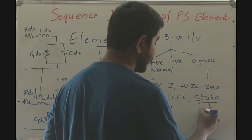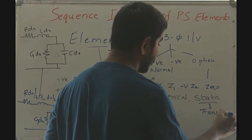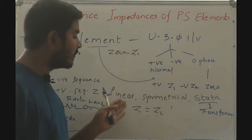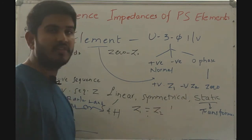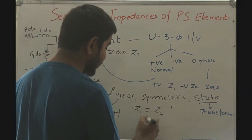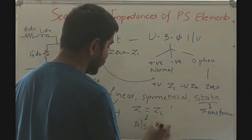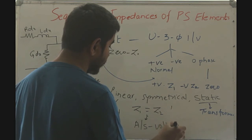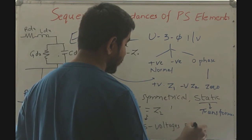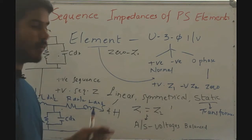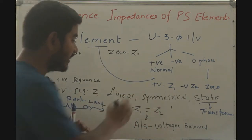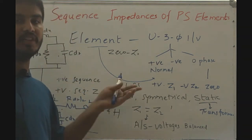For the static circuit — for example, a transformer, which does not have rotating parts — the positive sequence impedance will also equal the negative sequence impedance. For these circuits that are linear, symmetrical, and static, the positive sequence impedance equals the negative sequence impedance, provided the condition is that the applied or source voltages are balanced. When the source voltages remain balanced, the sequence impedances of these LSS circuits are independent of the phase order.